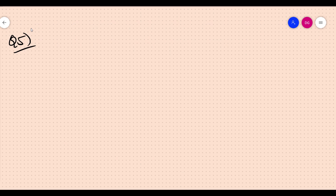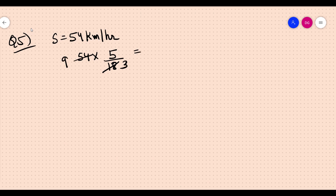Question five: A car moves at a speed of 54 kilometers per hour. What is the speed of the car in meters per second? 54 into 5 upon 18: simplifying gives 15 meters per second.